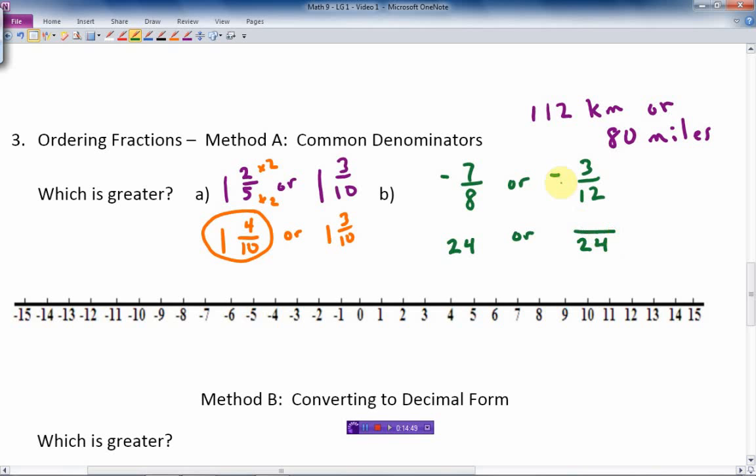Okay, so how do I change the eight to 24? Well, I multiply by three to get 24. Therefore, I multiply the top by three and I get 21. Remember, this is negative 21 over 24. Don't forget the negative sign. And for the 12, how do we get 12 to 24? Well, I'm just going to double the 12. And therefore, I double the top. Made a mistake already. Two times three is six. I had the six right. That's negative 6 over 24.